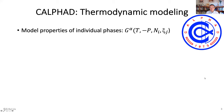CALPHAD is a biothermodynamic model. It models the properties of individual phases through Gibbs energy functions. Here it shows the Gibbs energy of the alpha phase as a function of temperature, pressure, composition, and KSI. KSI is very important — it represents internal variables.